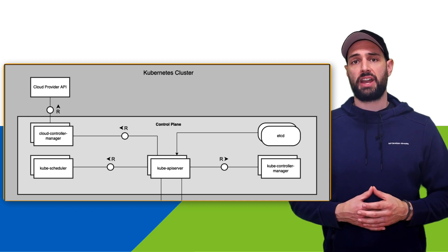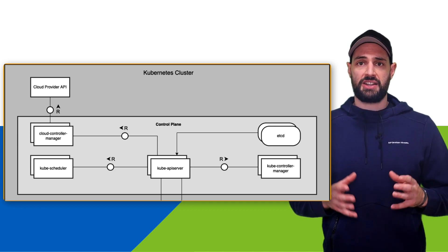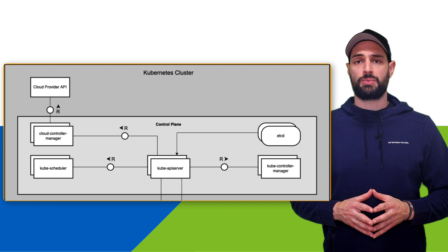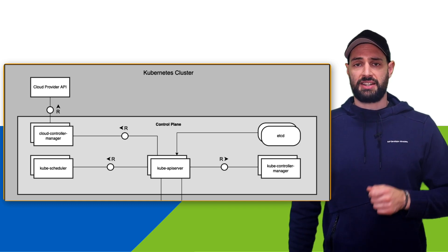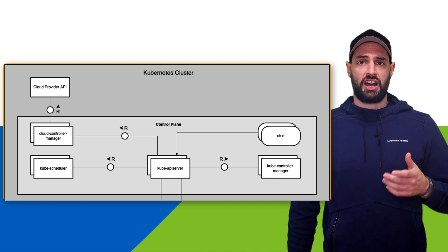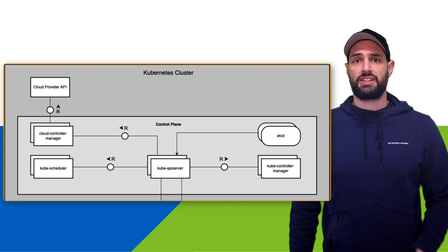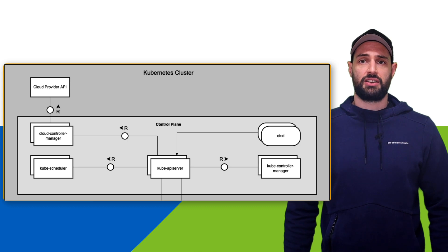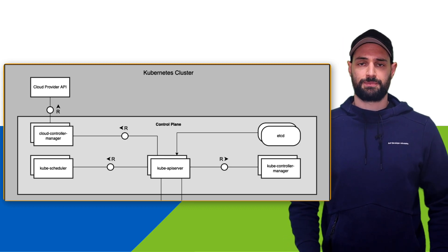One control plane component is the Kube API server. The Kubernetes API server is the central instance exposing the Kubernetes API, through which users and other components can interact with the internals of the Kubernetes cluster. It can be scaled horizontally if needed by deploying more instances of it.